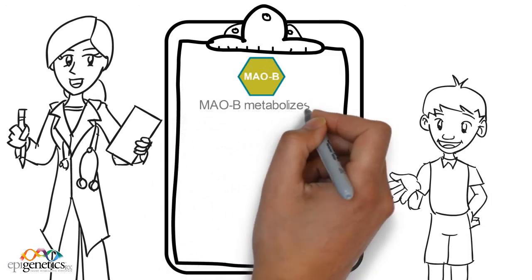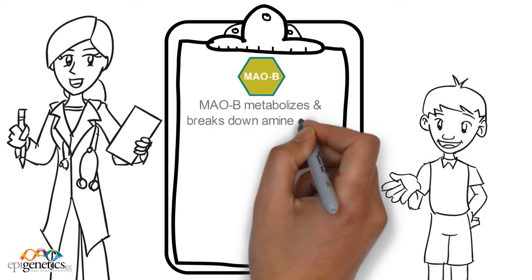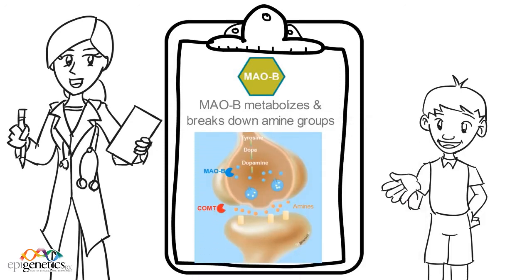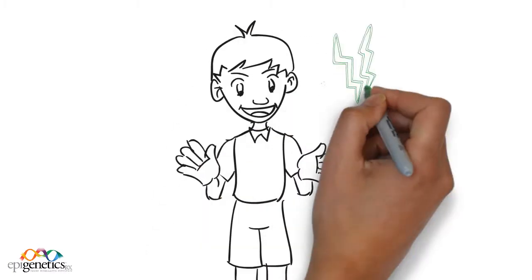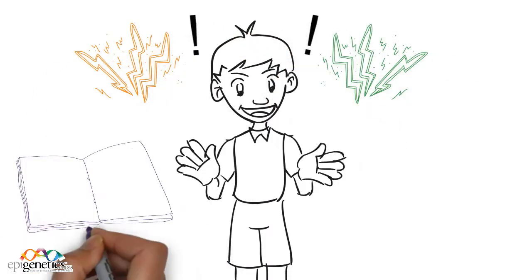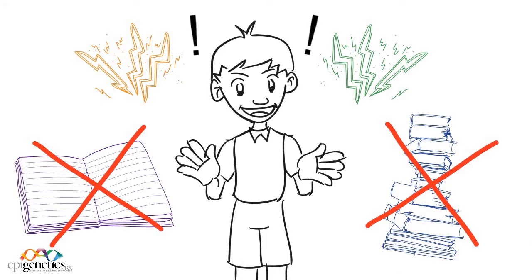The MAOB enzyme's primary job is to metabolize and break down dopamine and biogenic amines. Henry might have an excessive amount of dopamine, which may make it hard for him to regulate motivation, impulsivity, and his reward cascade.